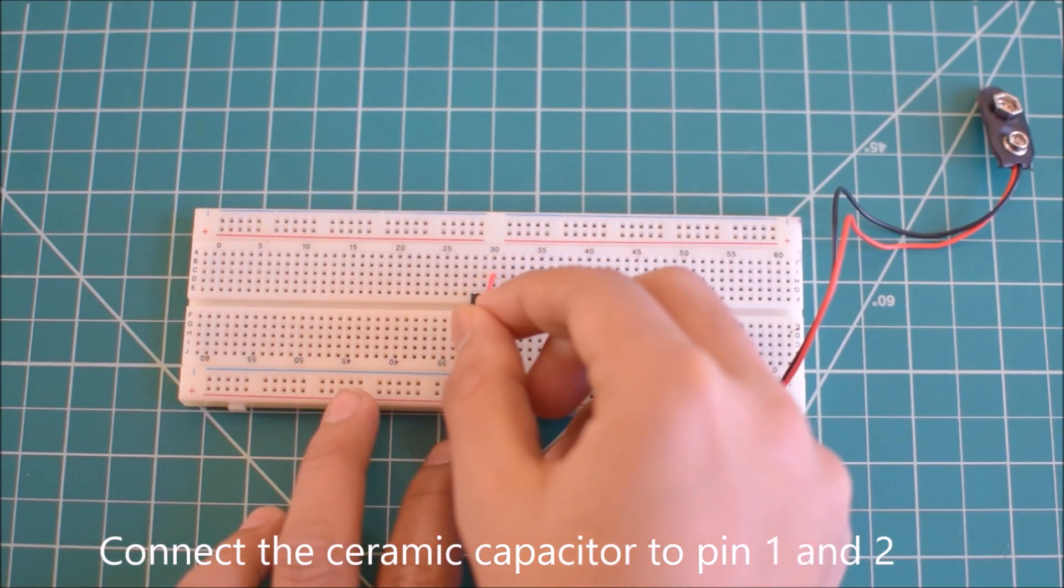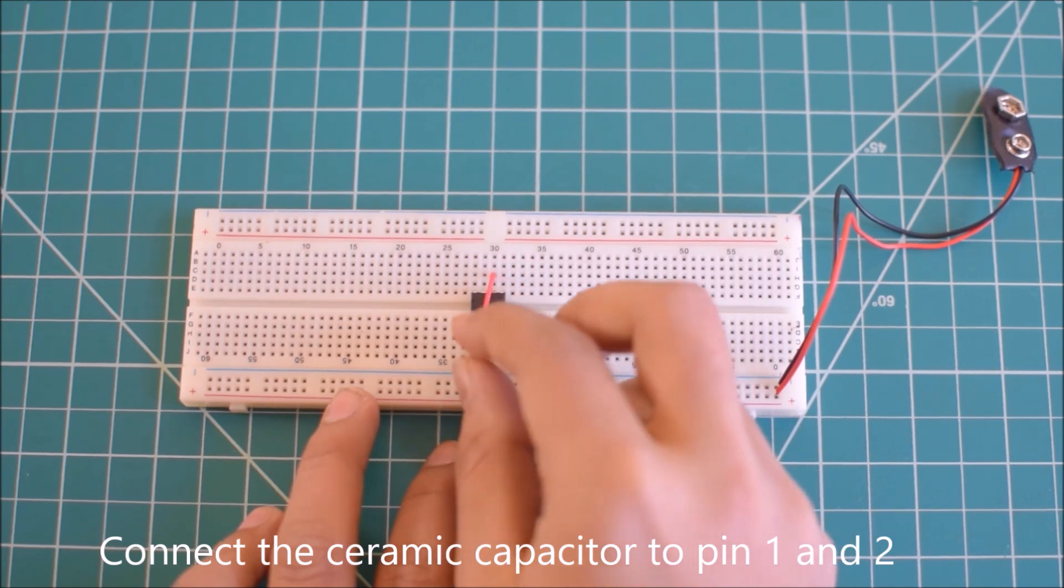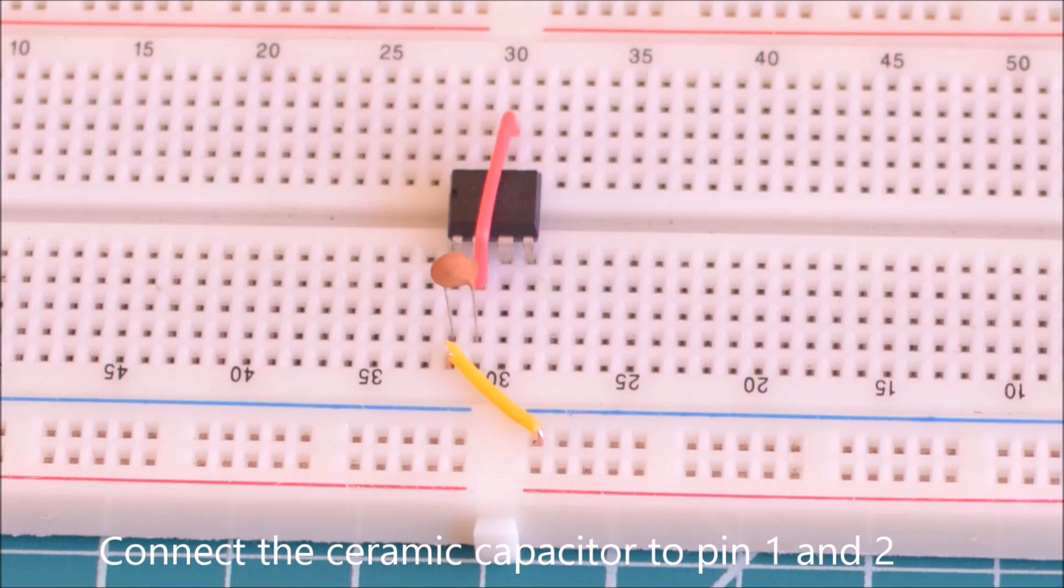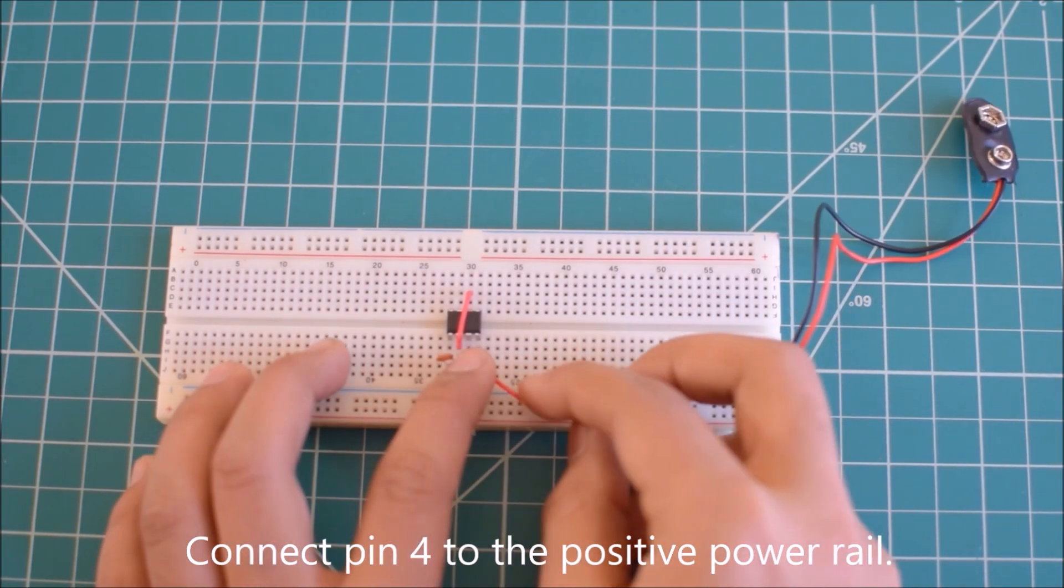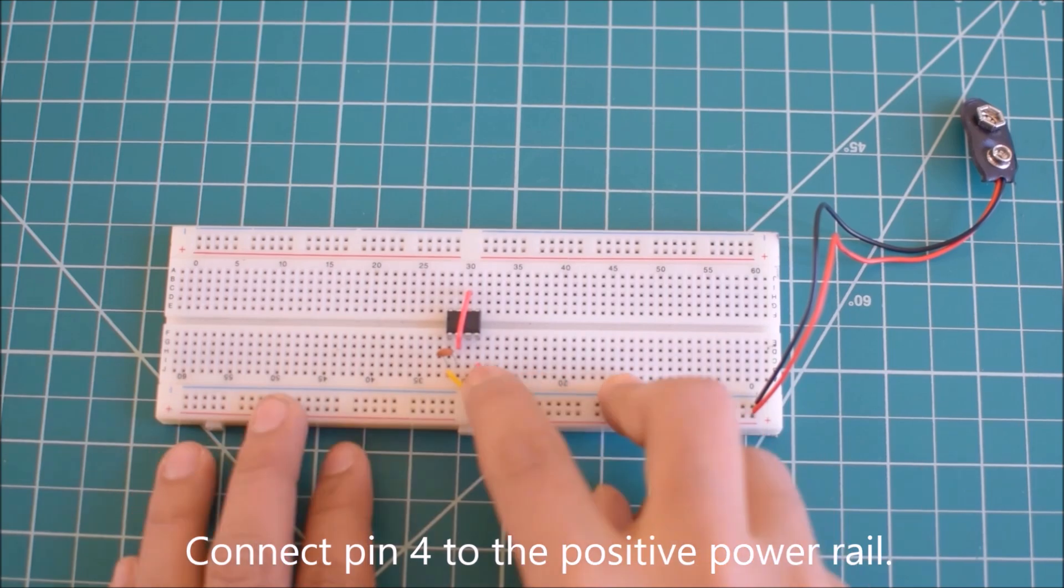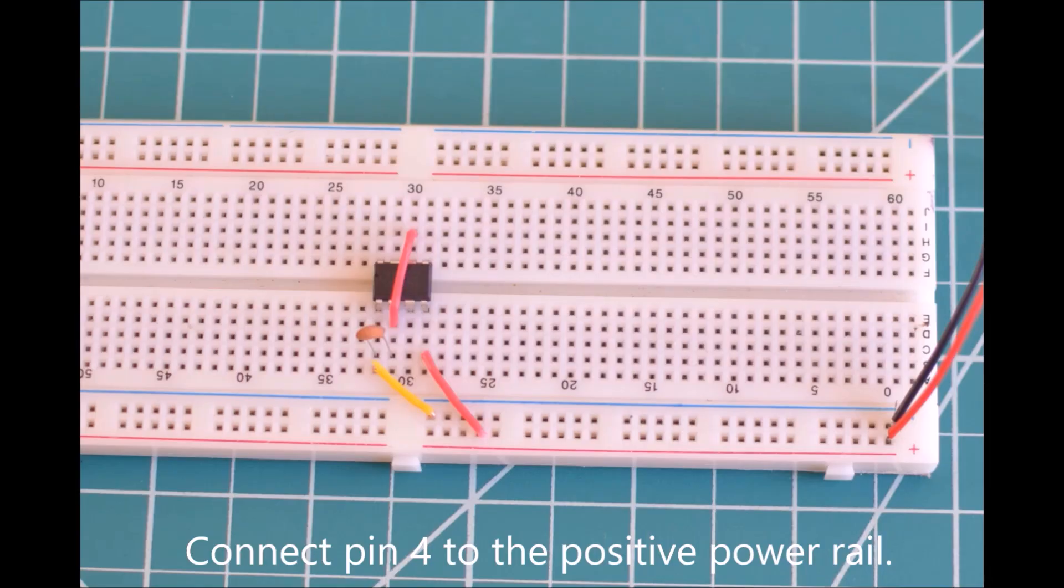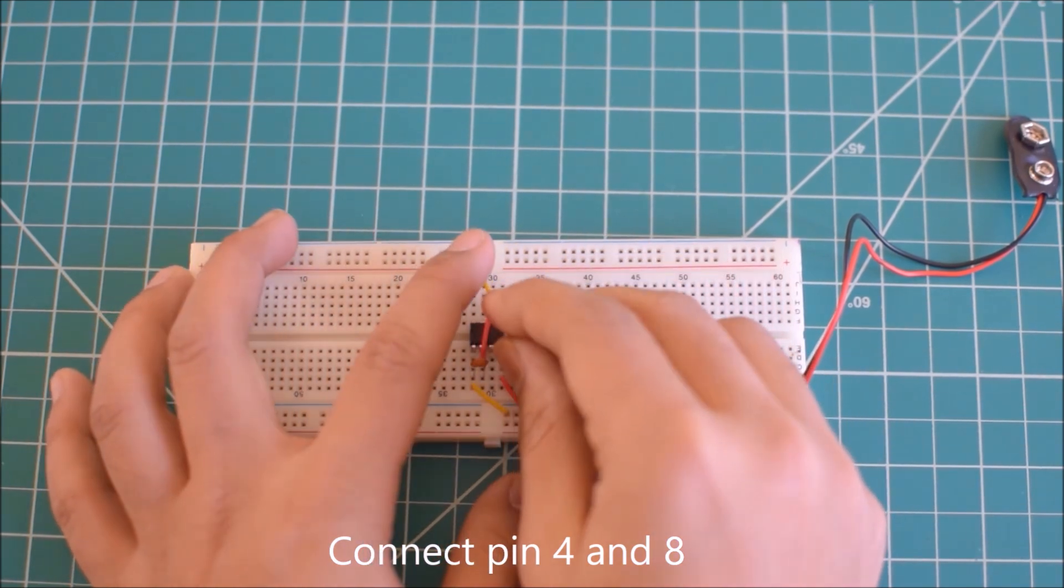Connect the ceramic capacitor into pin 1 and 2. Connect pin 4 to the positive power rail. Connect pin 4 and 8.